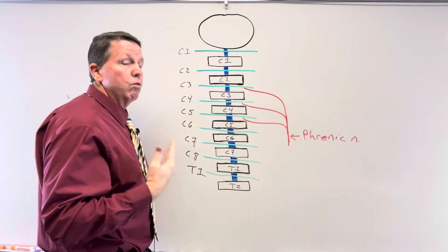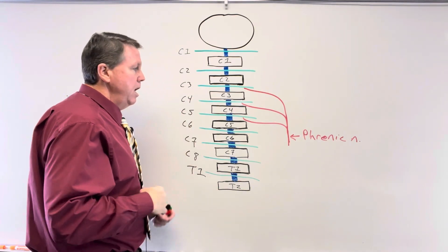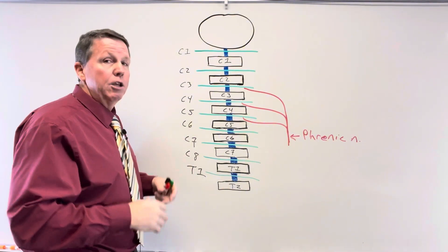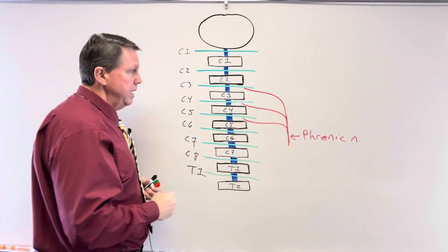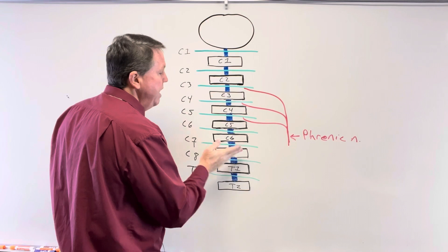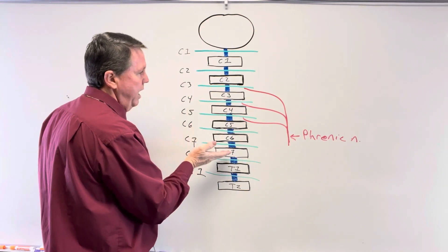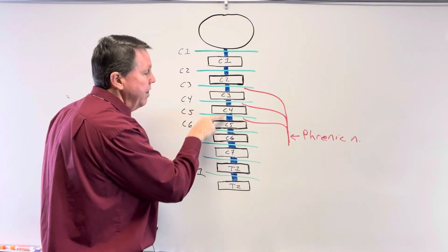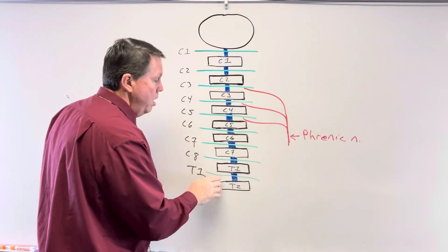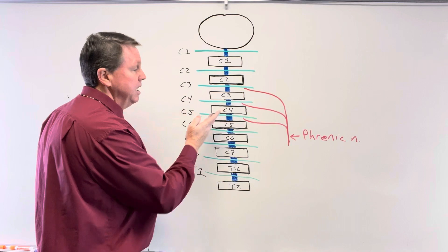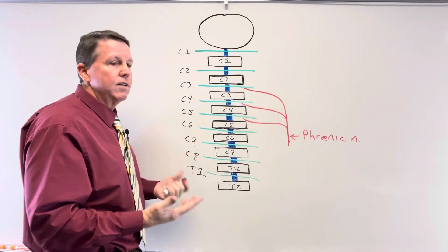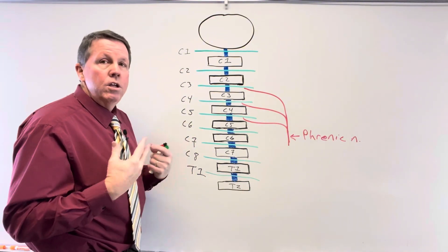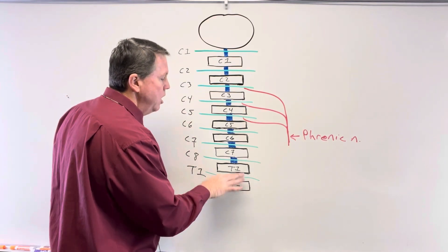Let's talk about the difference between quadriplegia and paraplegia. A quadriplegic is someone who cannot use their arms and legs. A paraplegic cannot use their legs and may be paralyzed from the chest down. If the damage is in the cervical spine, the person is more likely to be a quadriplegic. The further down the injury, the more arm function is preserved. Once we get down to T1, a person should generally be able to use their arms.